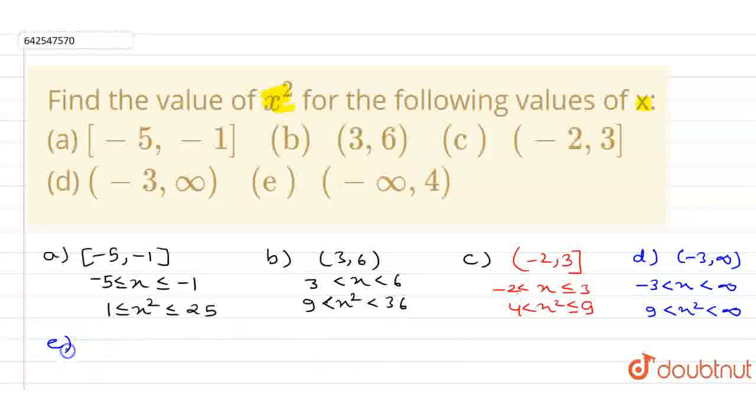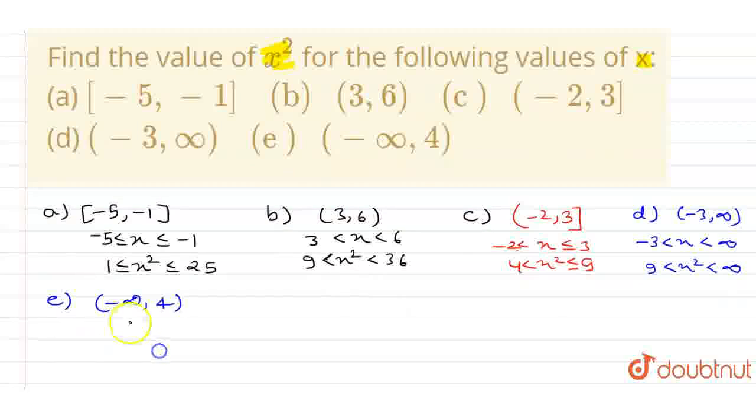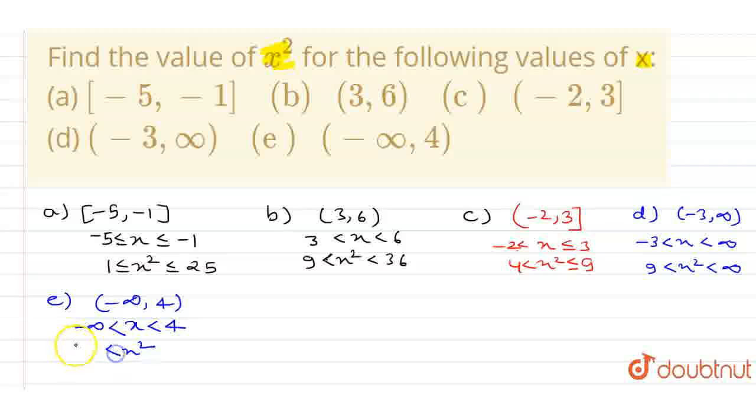And in e part, our e part is minus infinity to 4. So I can write it as x is less than 4 and 4 is greater than minus infinity. On squaring of x square, it is in between 16 to infinity. So these all are the value of x square, so thank you.